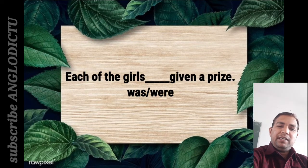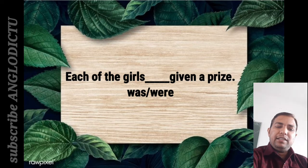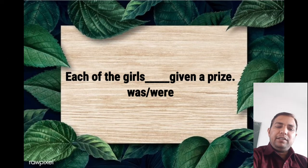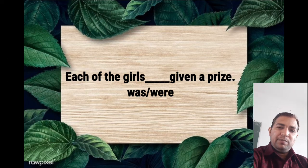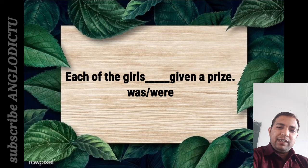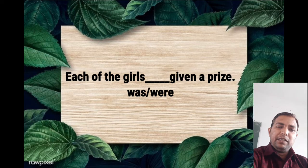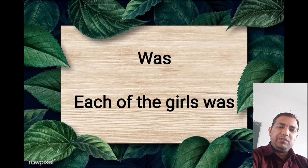'Each of the girls ___ given a prize' — was or were? Each of the girls — some students, jeb girls dekhtay hain, woher were lagana chaathe hain. W-E-R-E ko were padhtay hain, toh were lagana ki chah hoti hain. Lekin, hemhe lagana kiya hain — was. Each of the girls — was. Never use were.